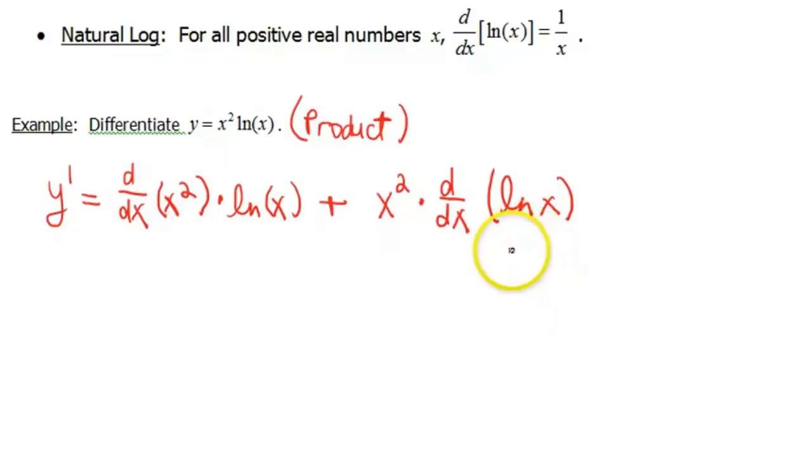Now we just go through and do the derivatives of the pieces that we have and throw everything together. So the derivative of x squared is 2x times the ln of x. Plus, then x squared, that one comes along, we don't do anything with that one. And times, let me go ahead and underline these as I'm doing them. So this is the one we need to practice, so that is 1 over x.